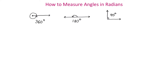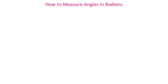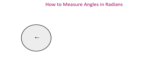Another important unit of measuring angles is the radian. To define one radian, we need to draw a circle. Let's draw a circle and let the radius of this circle be r. Then we will draw an angle whose vertex is at the center of this circle. Such an angle is called a central angle — an angle whose vertex is at the center of a circle.